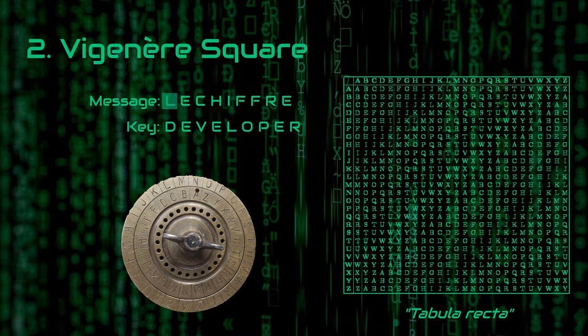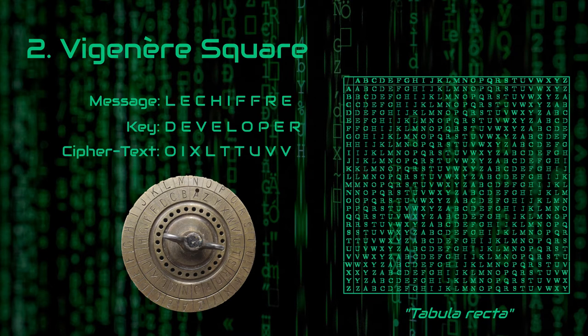Then pick a letter from your message and find the corresponding row. After that, pick a letter from your key and find the corresponding column. The overlapping letter is your encrypted letter. Iterate this process until you reach the end of your message, and then you should have an encrypted version of it. To decrypt a message, all you have to do is iterate over your key on the row of the square, then find the corresponding letter in the cipher text. The column letter should be the letter from the original message.